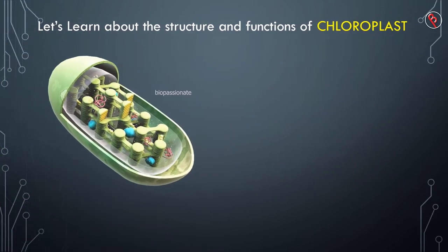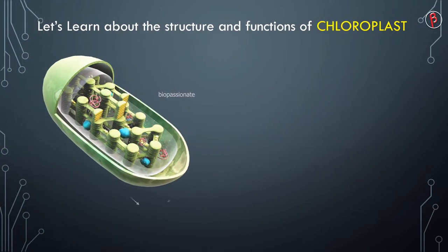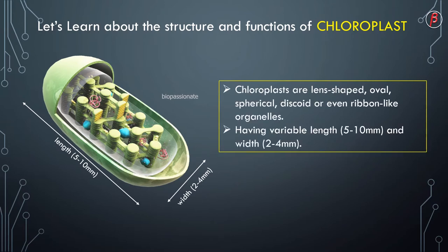Now we come to the structure of a chloroplast. Chloroplasts are lens-shaped, oval, spherical, discoid or even ribbon-like organelles. The length of the chloroplasts may vary from 5 to 10 micrometers and the width 2 to 4 micrometers.